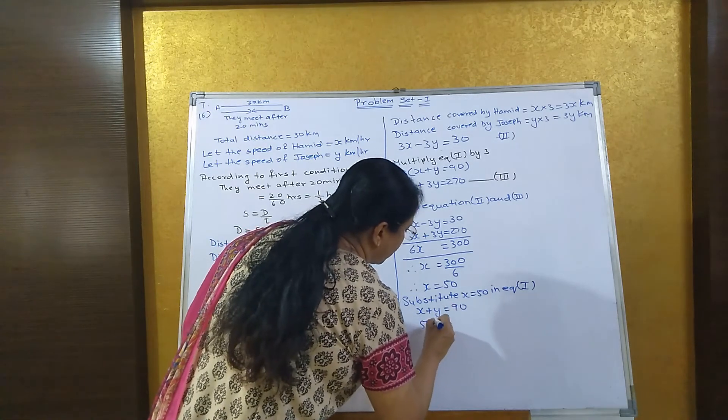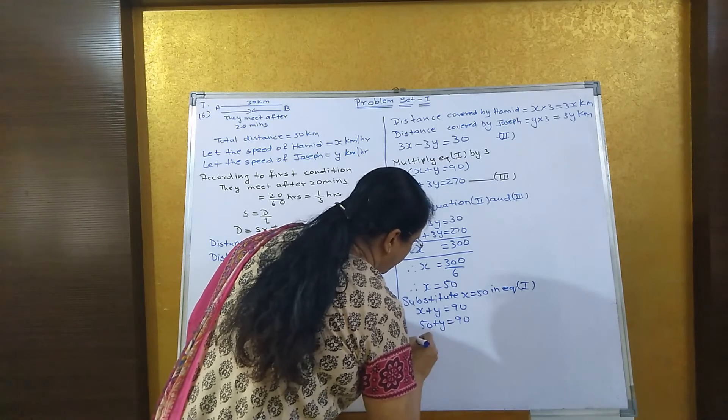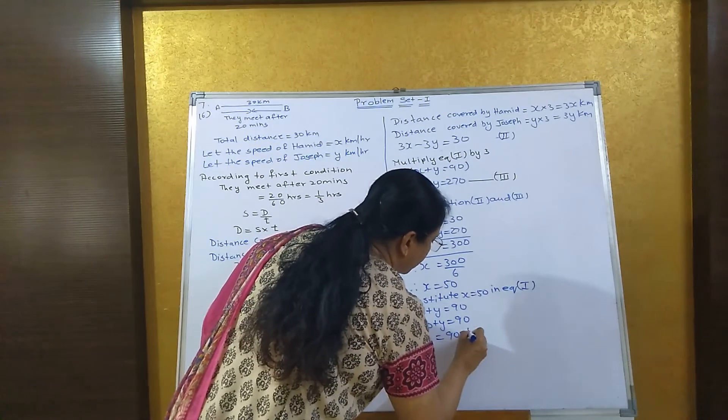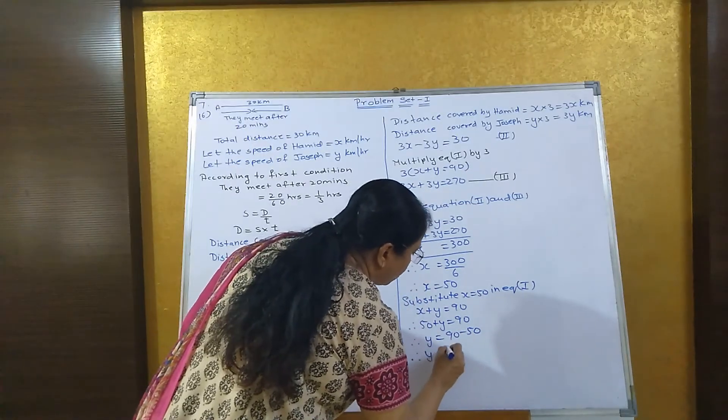That is 50 plus y equals 90. Therefore, y equals 40.